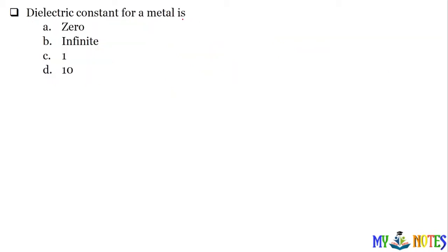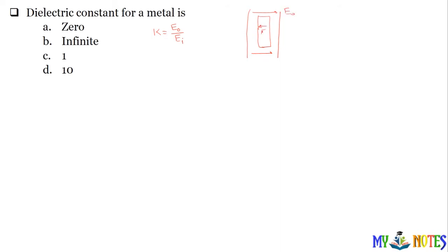Dielectric constant for a metal — metal ka dielectric constant kya hota hai? Dielectric constant ka ratio kya tha? Ratio of external electric field to the internal electric field. If you have a dielectric material placed in a parallel plate capacitor, then there is an external electric field and an internal electric field.